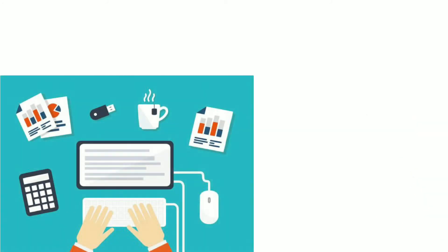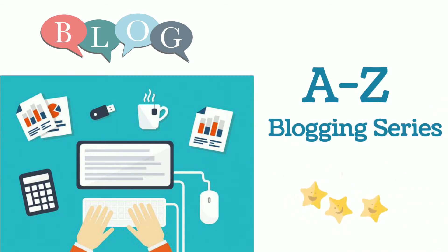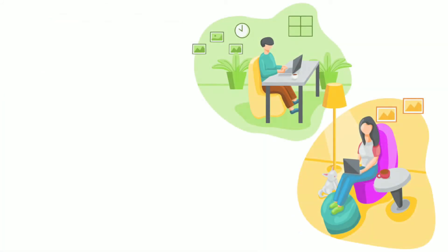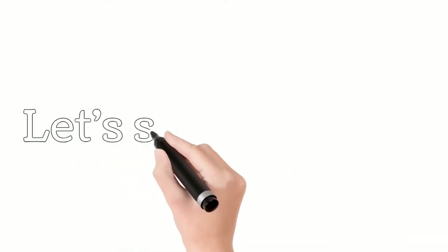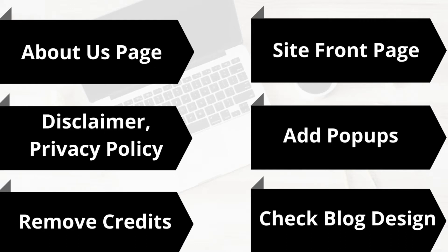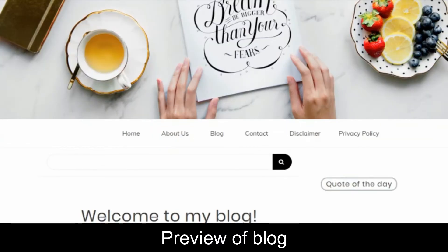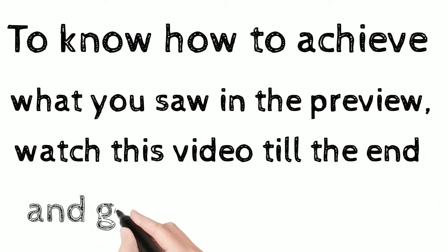Hello everyone, welcome back to the second video of the A to Z blogging series. In the last video we saw how to purchase a domain and hosting and install WordPress. In this video we are going to see how to install a WordPress theme, update the logo, title, tagline, main menu, social sites, and footer, how to add a contact form, update the front page, add a disclaimer and privacy policy, add pop-ups, and remove the WordPress credits. Watch this video till the end to get all the insights.